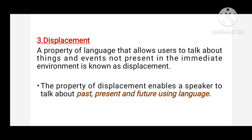Displacement refers to things and objects which are not present in the immediate environment. Displacement ki wajah se hum abstract cheezon ke baare mein bhi baat kar sakte hain. For example, human beings are able to talk about abstract objects like fairy, hell, and heaven, and emotions like honesty, bravery, and dishonesty. The property of displacement also enables a speaker to talk about the past, present, and future using language.